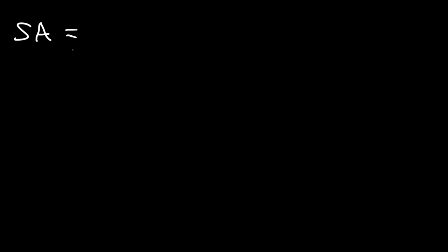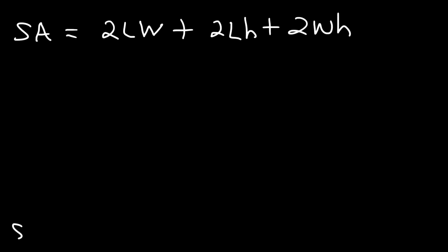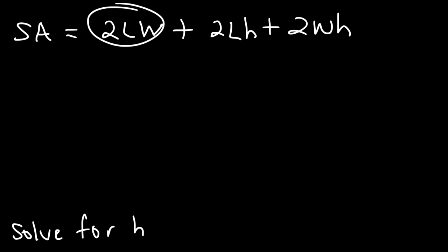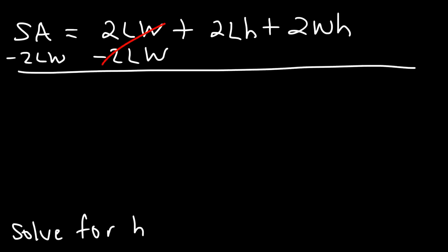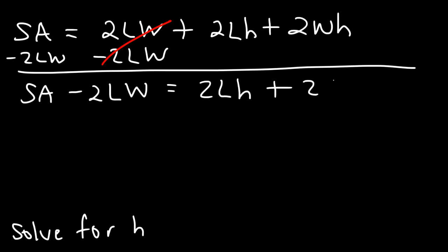Let's try another example: the surface area of a rectangular prism, which is basically a box. It's 2 times the length times the width, plus 2LH (where H is the height of the prism), plus 2WH. In this example we're going to solve for H. The first thing I want to do is move the 2LW term from the right side to the left side, so I'm going to subtract both sides by 2LW. What I have now is SA minus 2 times the length times the width, and that's equal to 2LH plus 2WH.